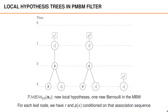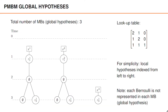At time three there is one measurement, so for each local hypothesis at time two we get two new local hypotheses corresponding to misdetection and association to the single measurement at time three. We also initiate one more Bernoulli for the measurement at this time step. The total number of multi-Bernoullis at time step three is equal to three, and they are listed in the lookup table on the right.